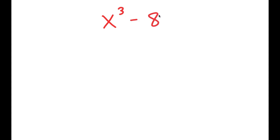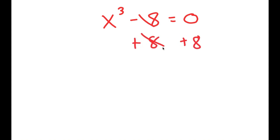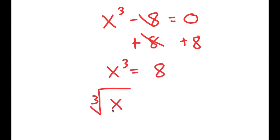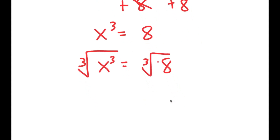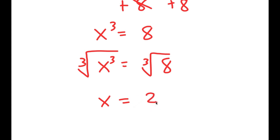In this video, I'm going to solve the equation x to the power of 3 minus 8 is equal to 0. So how most people solve this equation is they add 8 on both sides, so they get x to the power of 3 is equal to 8. And then they take the cube root on both sides. The cube root of x to the power of 3 is x, and the cube root of 8 is 2. So they get x equals 2, which is a solution to this equation.